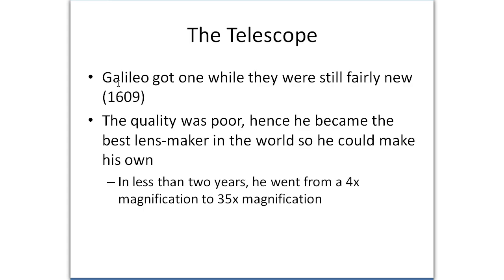However, in about 1609, Galileo got a telescope. At the time, telescopes were very new and the quality was very poor. But it was still pretty exciting because you could see things bigger, if not clear, that were far away. Galileo immediately realized the impact that this could have on his research.